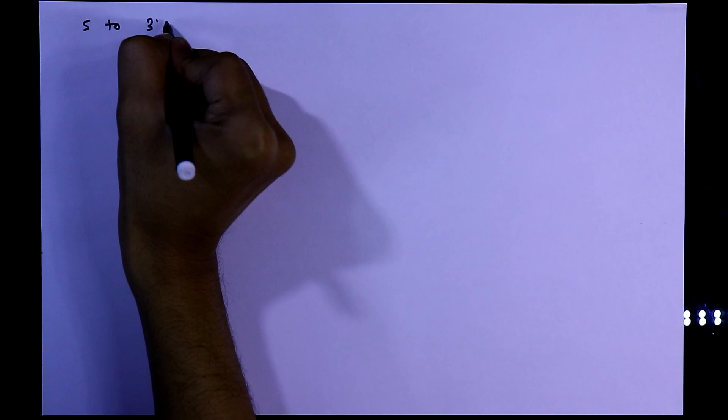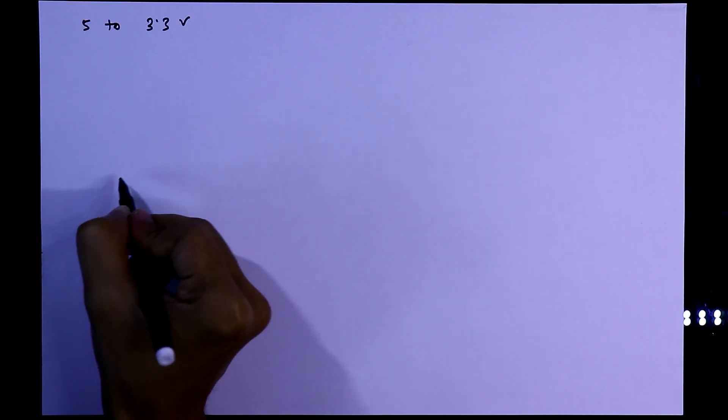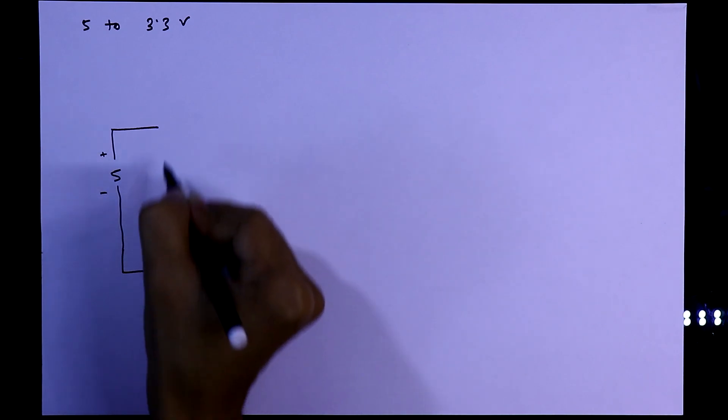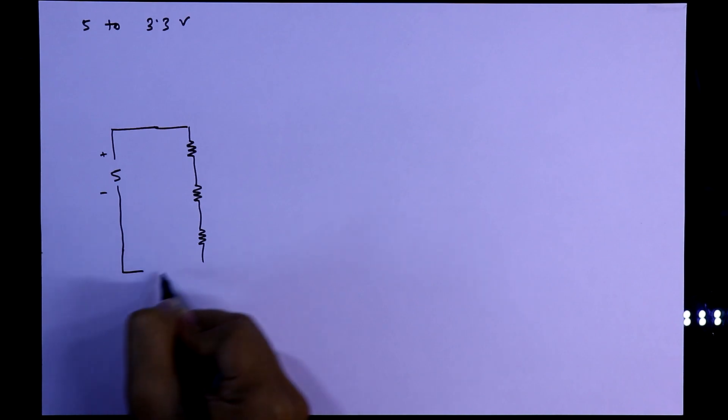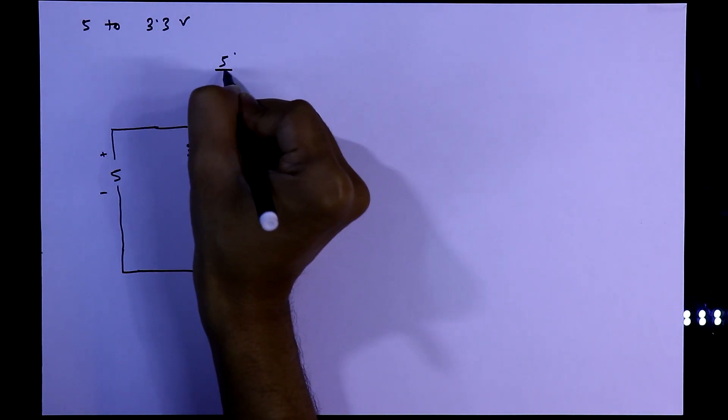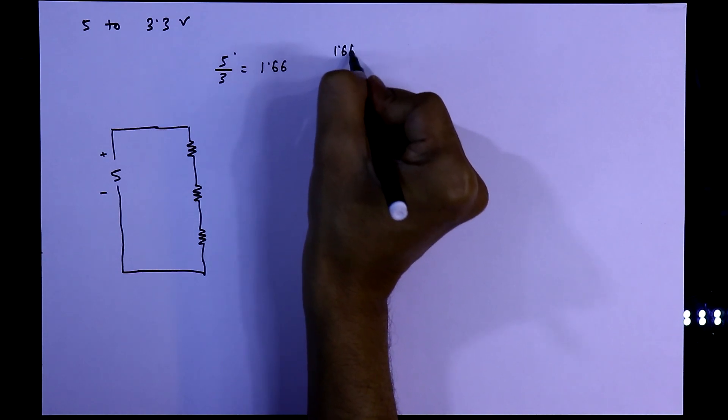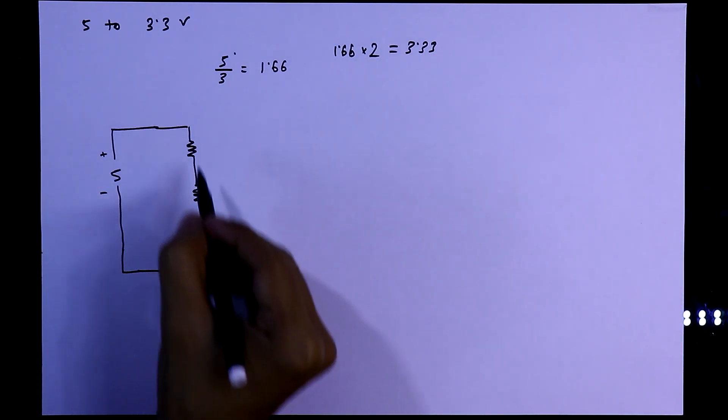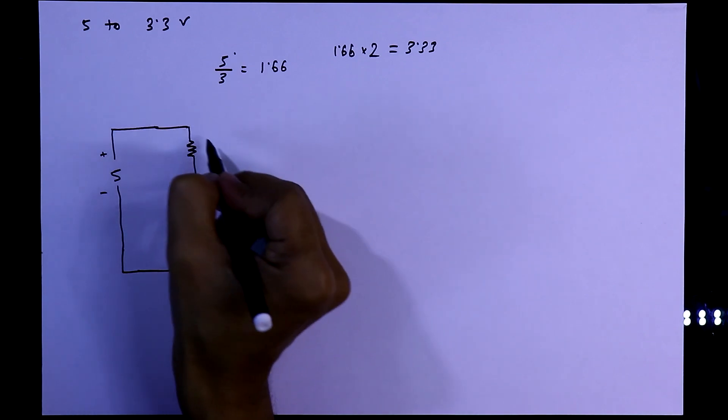If someone asked me to convert 5V to 3.3V, now I will show you how I will do it. First I will take the 5V that is positive side and that is negative side. Then I will divide it by 3. As we know 5 divided by 3 is equal to 1.66. And if we multiply 1.66 by 2 then we will get 3.33.